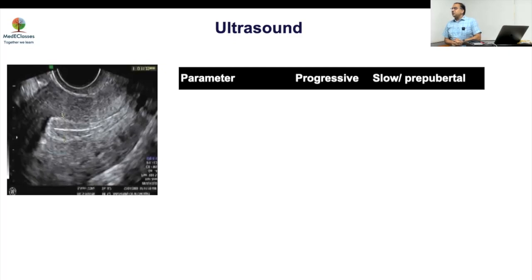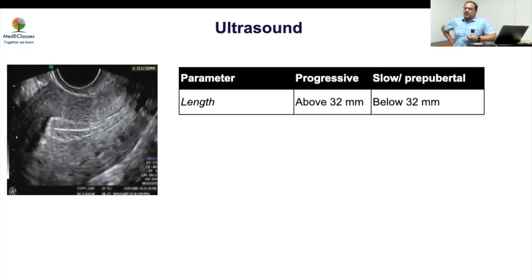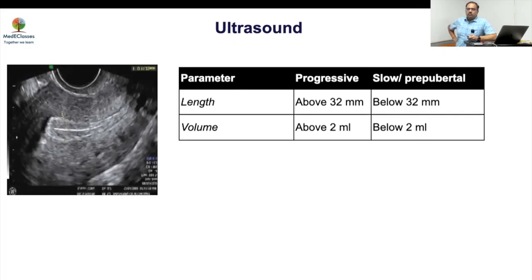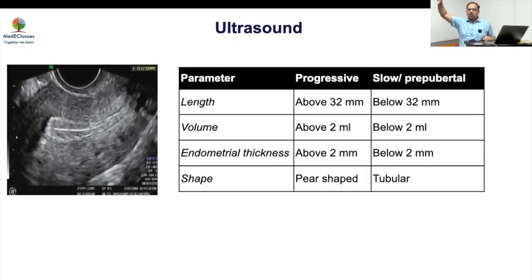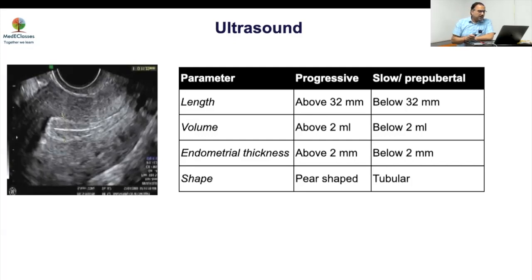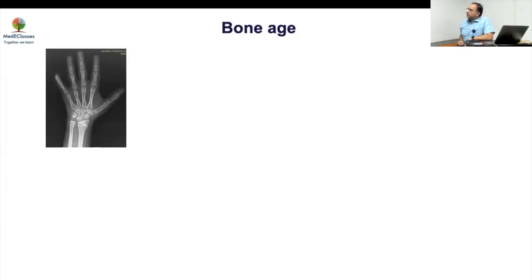Isolated thelarche in childhood with no uterine effect on ultrasound confirms isolated thelarche. However, if the uterus is longer, more globular, has endometrial thickness, or has increased length, this is not isolated thelarche — it is progressive puberty. Ultrasound is therefore extremely important to assess progression.